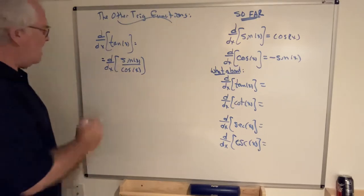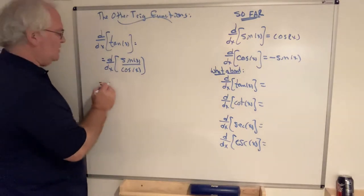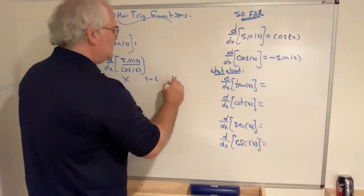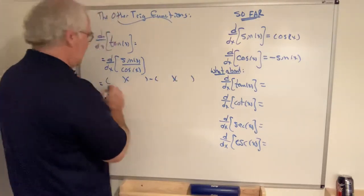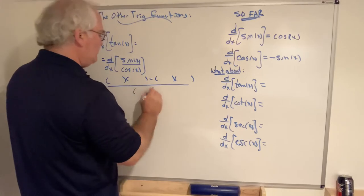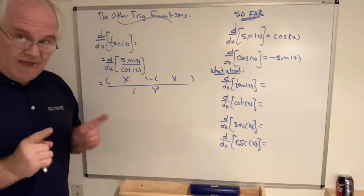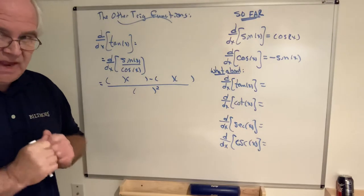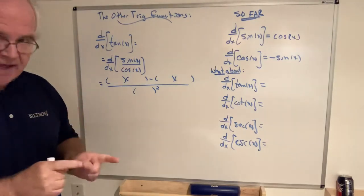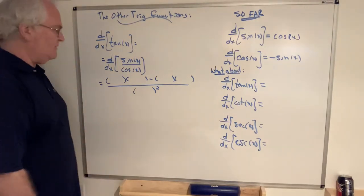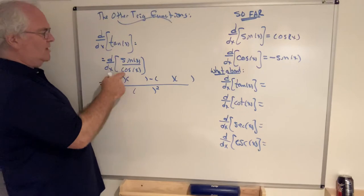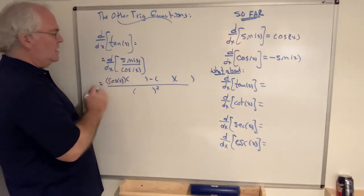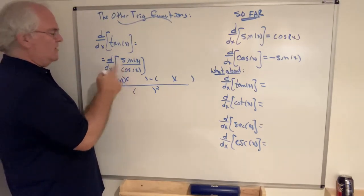The quotient rule gives us: denominator times the derivative of the numerator, minus numerator times the derivative of the denominator, all over the denominator squared. And then simplify. In this case, yes, you are instructed to simplify.